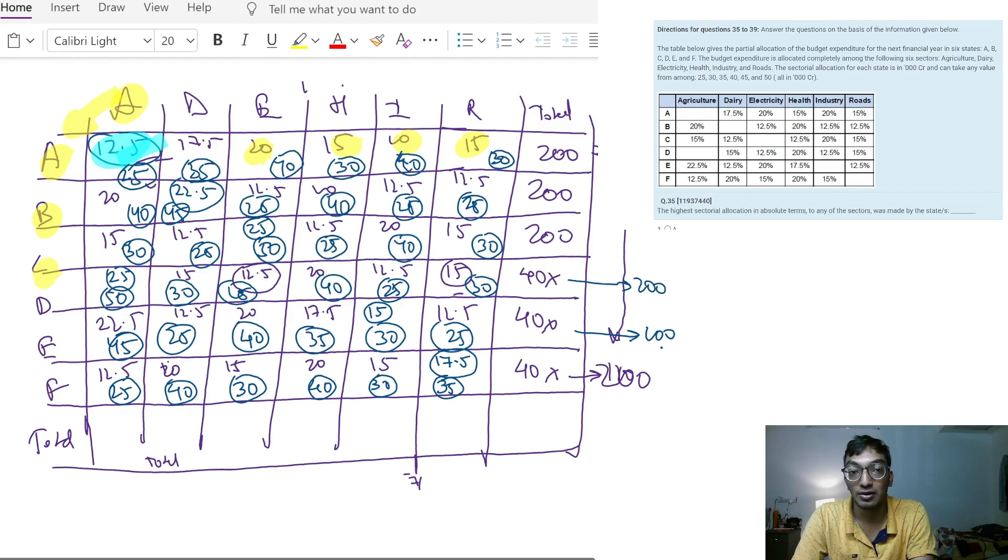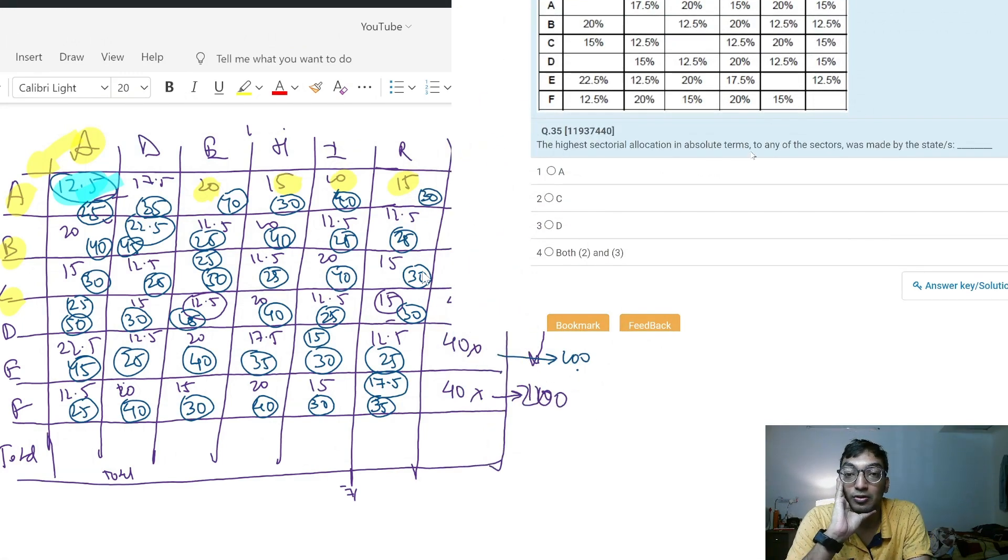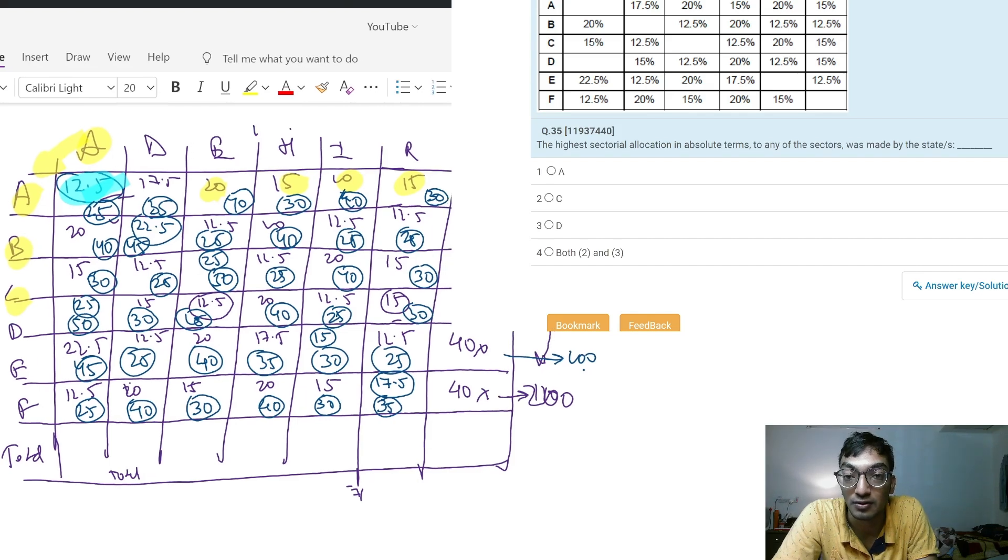First question: The highest sectoral allotment in absolute terms to any sector was made by which state? Whoever allocated 50, that's the answer. 50% - who allocated 50? C allocated 50 and D also allocated 50. So both C and D take the share of this. Let's move on to the next question.